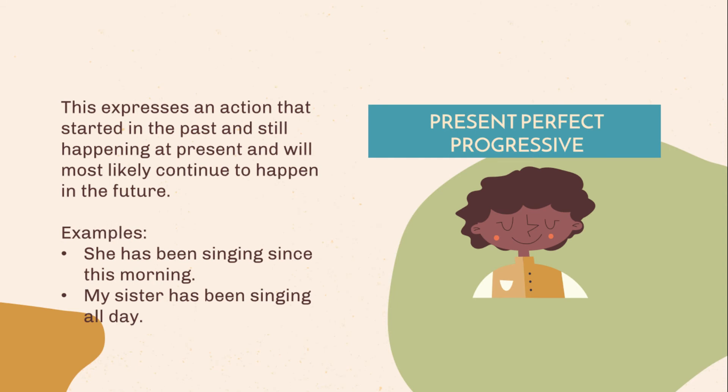Present perfect progressive. This expresses an action that started in the past and is still happening at present, and will most likely continue to happen in the future. Examples: She has been singing since this morning. My sister has been singing all day.